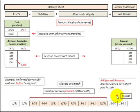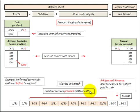We've earned revenue during this time frame but haven't received payment until after we've provided the good or service. In this example, five thousand dollars is the payment received after we provided the goods or services.